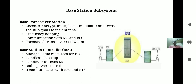Next is the base station subsystem. The base station subsystem maintains radio connection to the mobile station and performs the coding and decoding. It is divided into two parts: the Base Transceiver Station (BTS) and the Base Station Controller (BSC). The BTS comprises antenna, signal processing, amplifiers, and can form a signal cell using sectorized antennas.